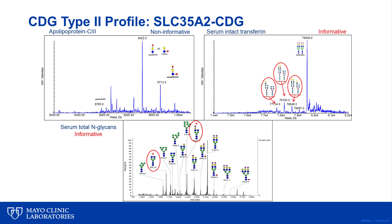SLC35A2 CDG, or Early Infantile Epileptic Encephalopathy 22, is a CDG in which a type 2 pattern is seen in the transferrin profile. The transferrin profile has several peaks representing partially glycosylated protein. This is a type 2 pattern and indicates a remodeling or processing defect. There is increased trisialo and monosialo transferrin, contrasting with what is seen in a type 1 profile. Total glycan analysis reveals the characteristic signature glycans, and the APOC3 profile is non-informative.